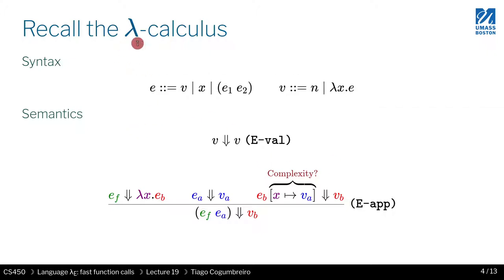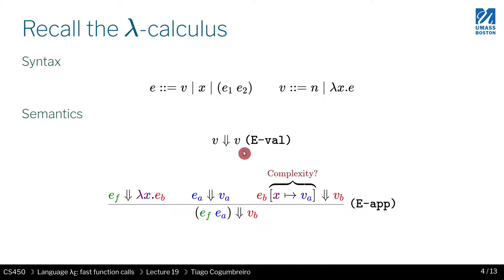So let's look at what we have. In the lambda calculus, we have expressions — they could be either primitive values, which are either numbers or lambdas, or variables, or function calls. The semantics of any functional programming language can be defined in only two rules.